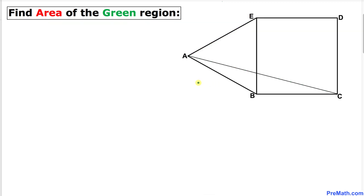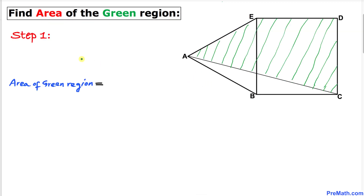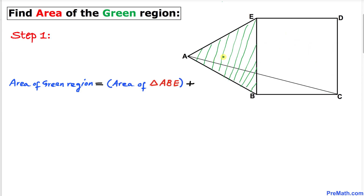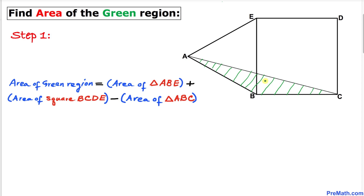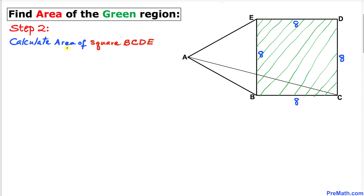Let's get started with the solution. The area of this green shaded region is equal to the area of triangle ABE plus the area of square BCDE minus the area of triangle ABC.